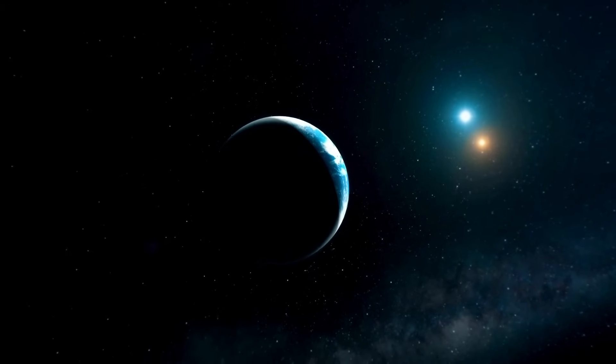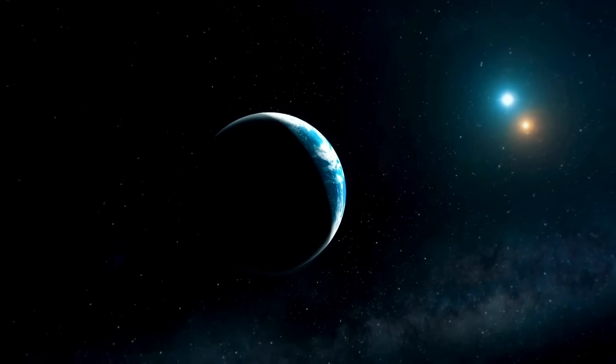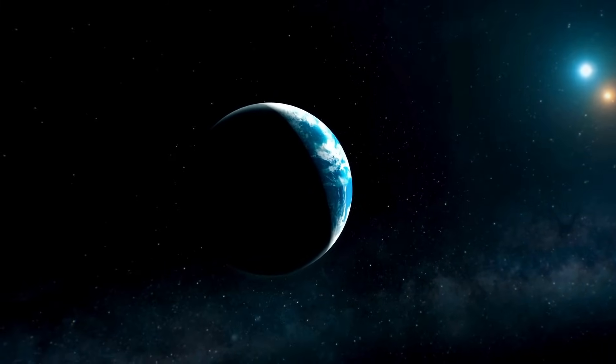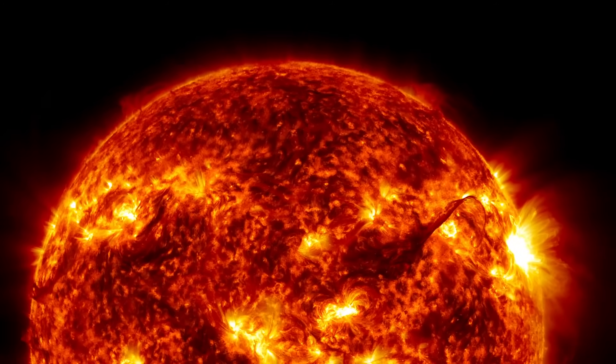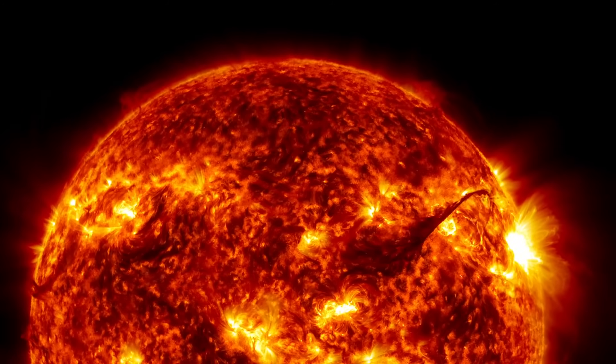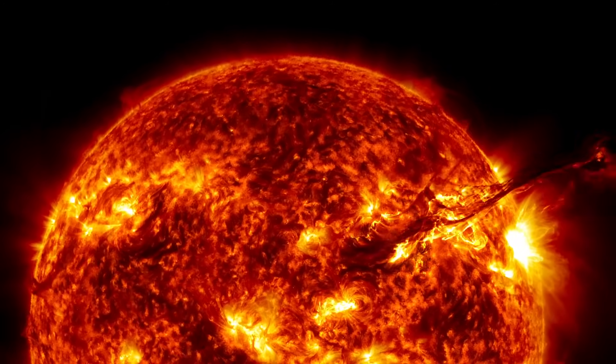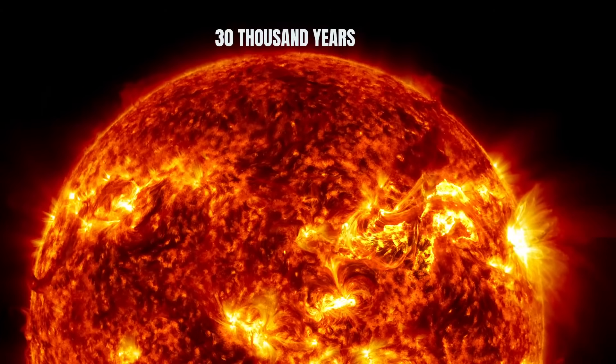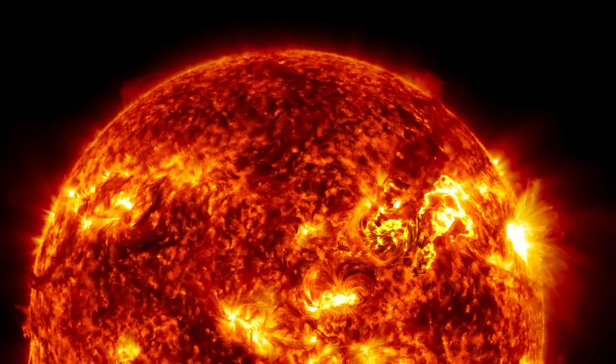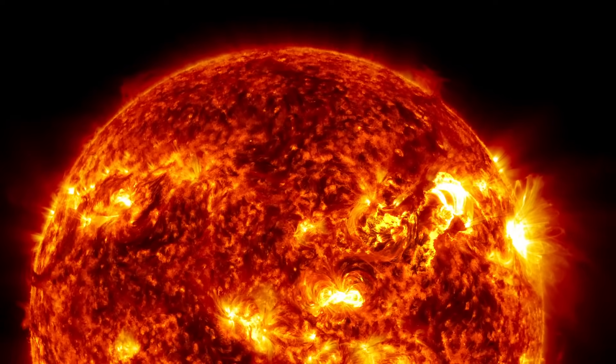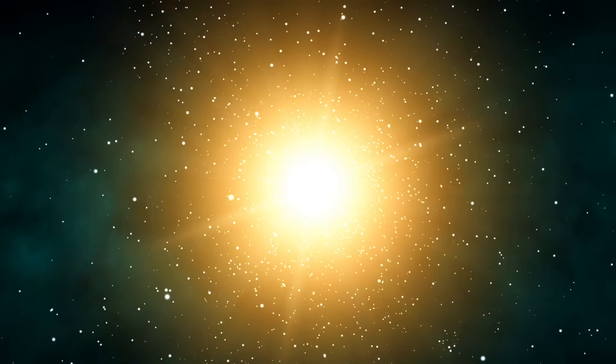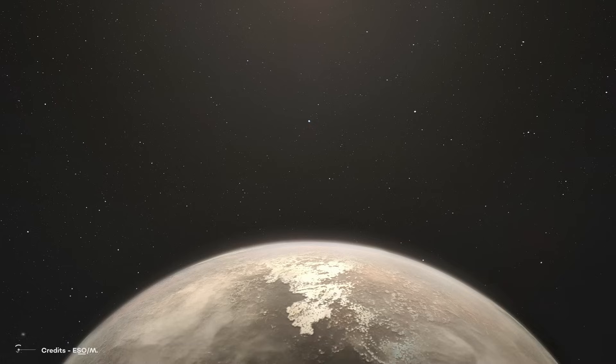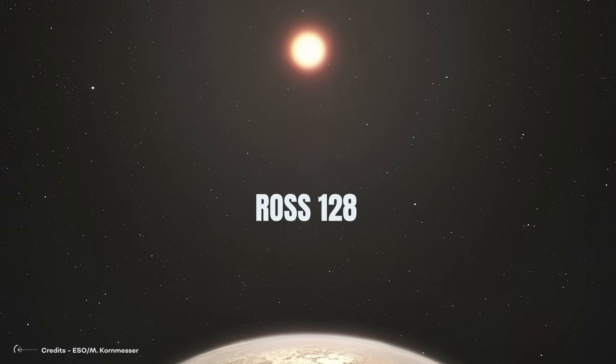However, in 4.5 billion years, when the Sun has consumed all its fuel and dies, humanity will have to move to another solar system. Unfortunately, in 4.5 billion years, Alpha Centauri will no longer be the closest star system to our solar system. In 30,000 years, when Alpha Centauri reaches its closest point to the Sun, it will continue to advance and move away from us slowly. 80,000 years later, Alpha Centauri will have moved so far from the Sun that it will no longer be visible to the naked eye, and the closest star to the Sun will be Ross 128.